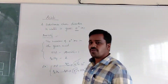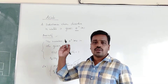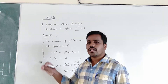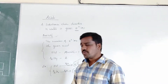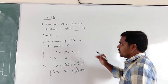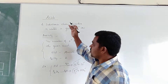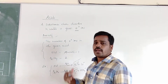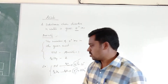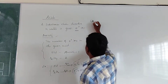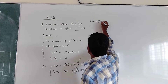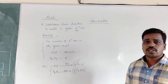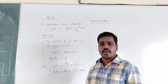How can we determine the basicity of a given acid? The number of H plus ions present in the acid indicates its basicity. After knowing the definition of acid and the concept of basicity, we can now explain the classification of acids. Acids are generally classified into two types: organic acids and inorganic acids.